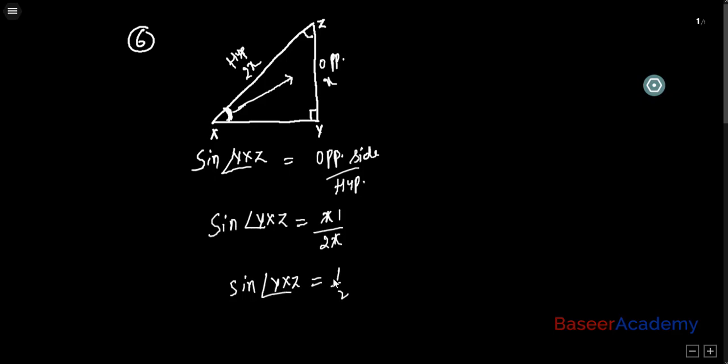When do you get 1 by 2 in sine? Sine 30 degrees is 1 by 2. So this angle YXZ becomes equal to 30 degrees, because sine becomes equal to half when the angle is 30 degrees.